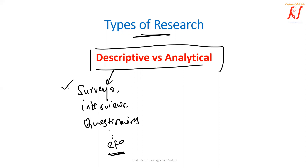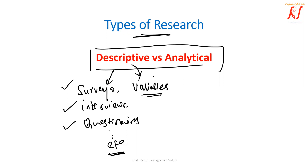a number of questions we may ask face to face, from a community via interviews, online, or via several sets of questionnaires. In descriptive type of research, we do not have any control over the variables — we need to follow the variables as they are.